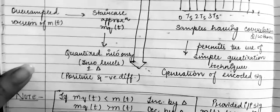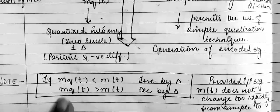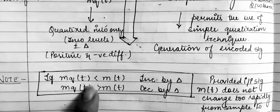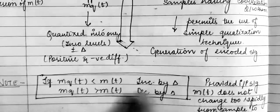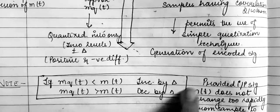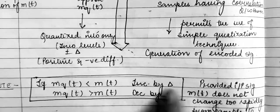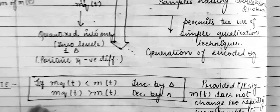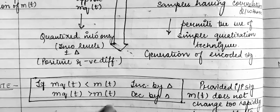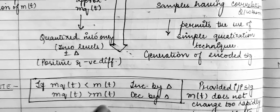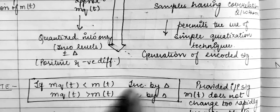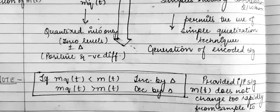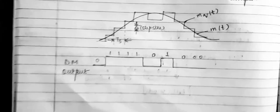After that, the signal gets quantized into two levels: positive and negative. We note an important point: if mq(t) is greater than m(t), there will be an increment by delta in the positive direction, and when mq(t) is less than m(t), there will be a decrement by delta in the negative direction.